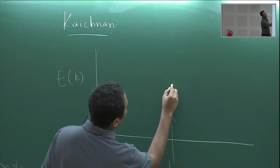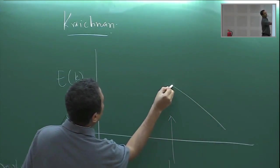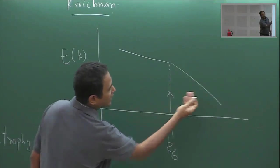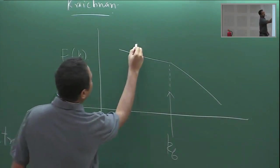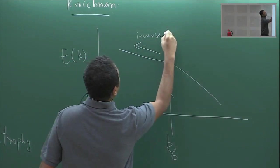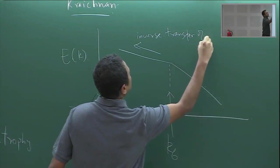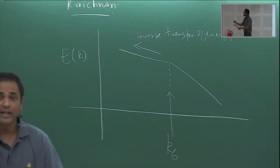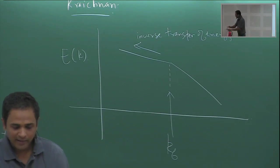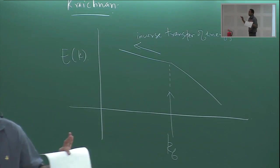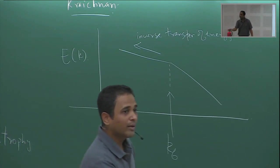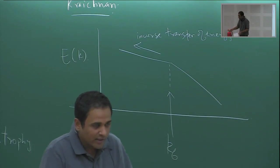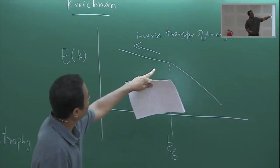But in 2D, remarkably, what you get is two different spectra on either side of the forcing wavenumber, with an inverse transfer of energy. In physical space, if you start with an isotropic random initial condition and let it evolve, you find the spontaneous formation of large-scale coherent structures — energy moves to bigger and bigger scales.